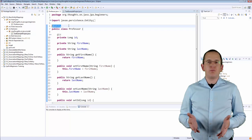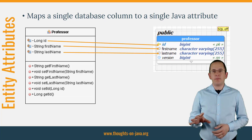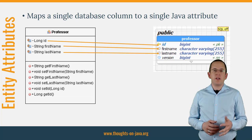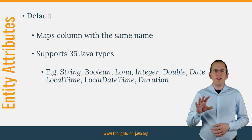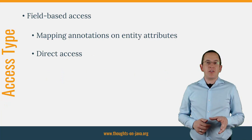By default, each basic attribute of your entity class gets mapped to a database column with the same name. If you want to exclude an attribute from the mapping or map it to a column with a different name, you need to annotate it with one or more additional annotations. You don't need to provide any mapping information for most entity attributes. JPA defines a default mapping that supports most standard data types like String, Boolean, different numeric classes and primitive types, some classes of the Date and Time API, and many more.